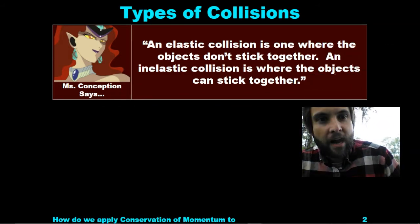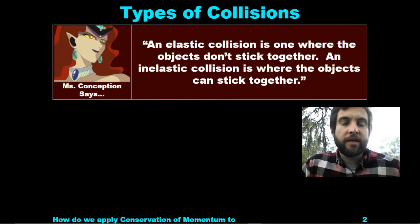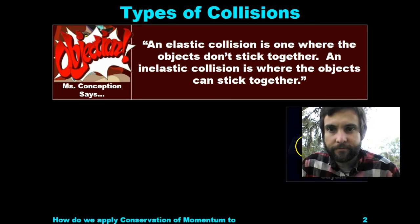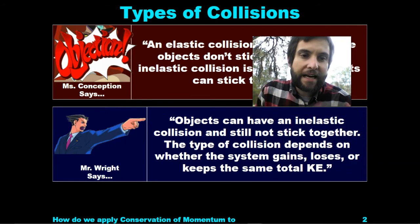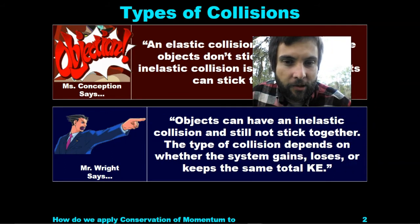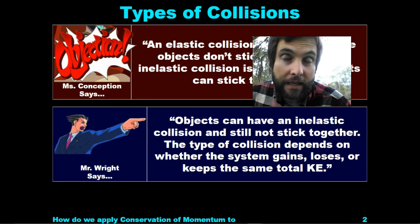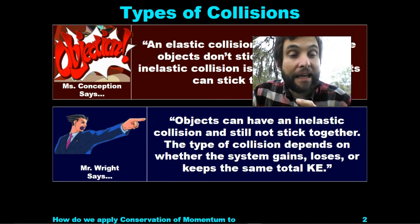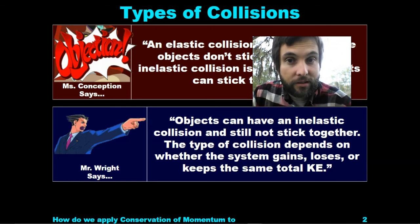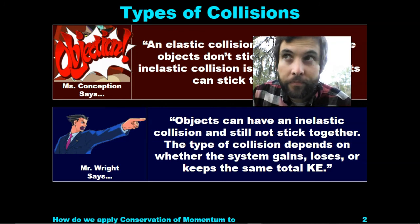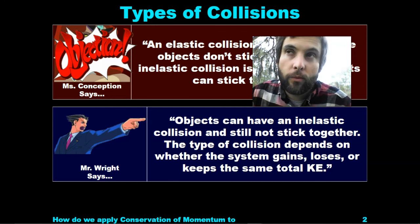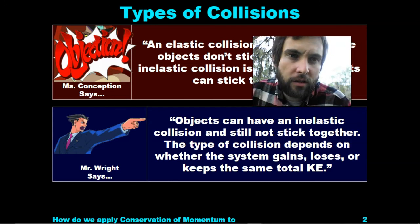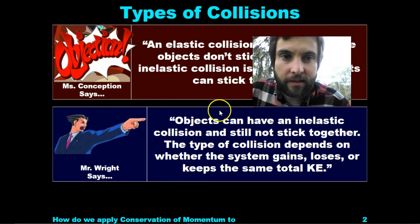An elastic collision is one where objects don't stick together, and an inelastic collision is where objects can stick together — but objects can have an inelastic collision and still not stick together. The type of collision depends on whether the system gains, loses, or keeps the same total kinetic energy. In a perfectly inelastic collision they stick together; in elastic, kinetic energy is conserved; in inelastic, it is not.